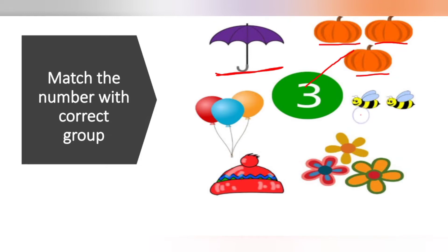Bees: 1, 2 - only 2. Next, balloons: 1 red balloon, blue balloon second, and orange one third. So 3 balloons. We match them. The next one, cap - only 1. Right?